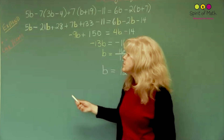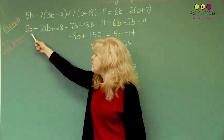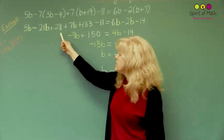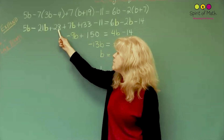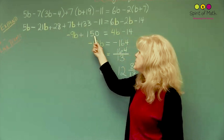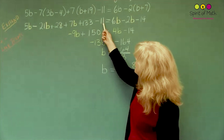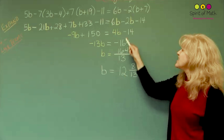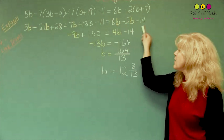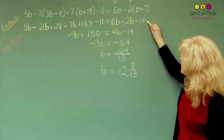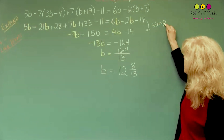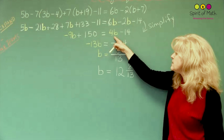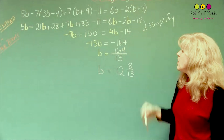So now what you can do is add and subtract like terms. You've got all the b's: 5b minus 21b plus 7b gives you negative 9b. Then on the same side of the equation you've got 28 plus 133, and the minus 11, which is 150. Then on the other side, you can simplify: you can only subtract 2b from 6b, and you get 4b minus 14. Going from here to here is called simplifying.